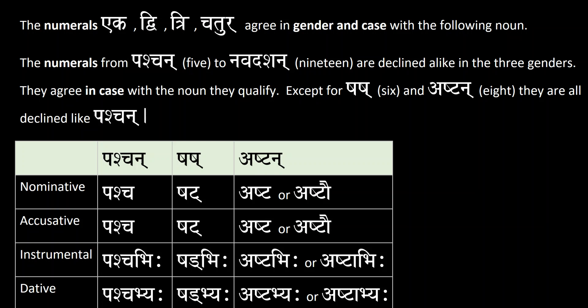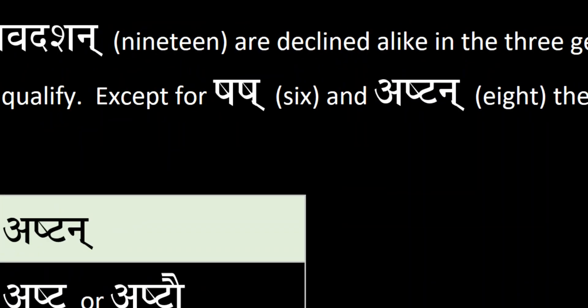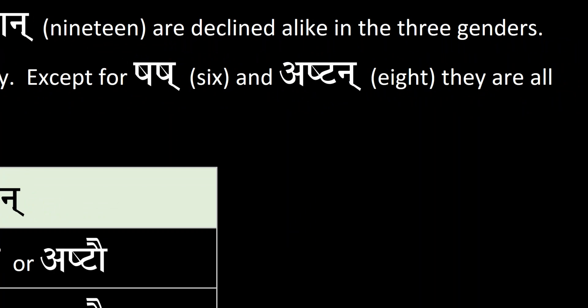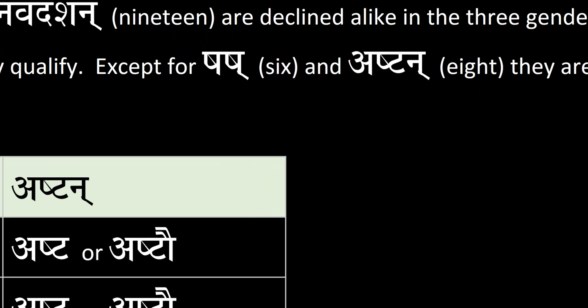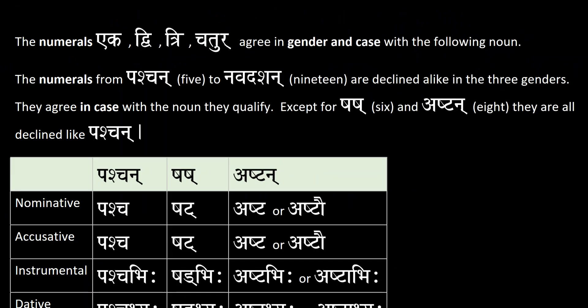So in other words, you do not have to worry about masculine, feminine, and neuter like you did for numbers 1, 2, 3, and 4. They agree in case with the noun that they qualify. Except for Ṣaṣ, which is number 6, and Aṣṭan, which is number 8. The rest of the numbers from 5 to 19 are all declined like Pañcan.